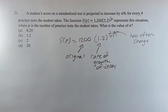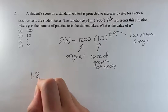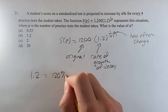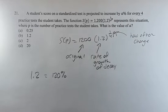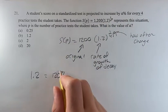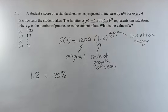So what is this rate of growth or decay? Well, 1.2, in this context, is 120%. Right? Every time we go four practice tests, we're going to be 120% bigger than the last time.